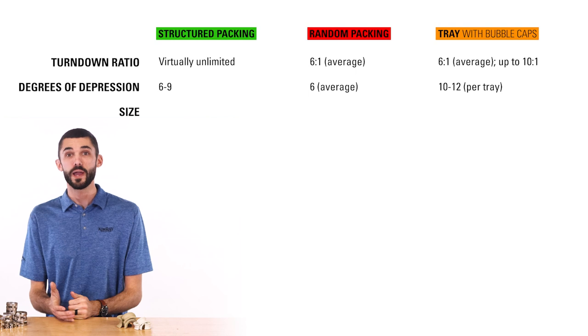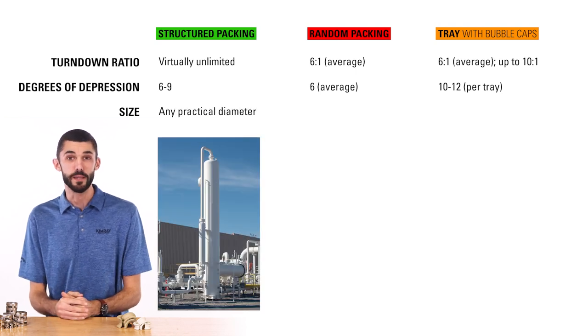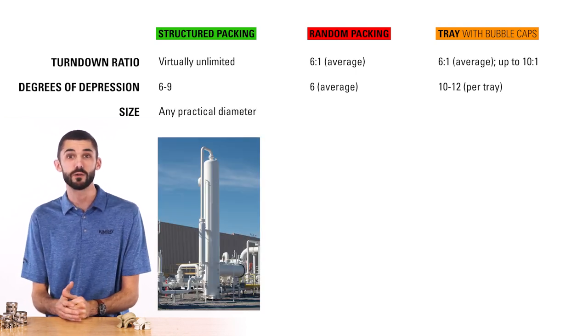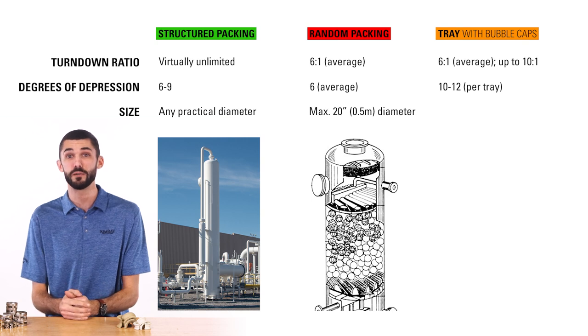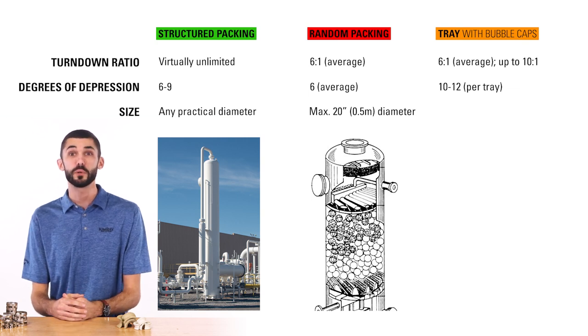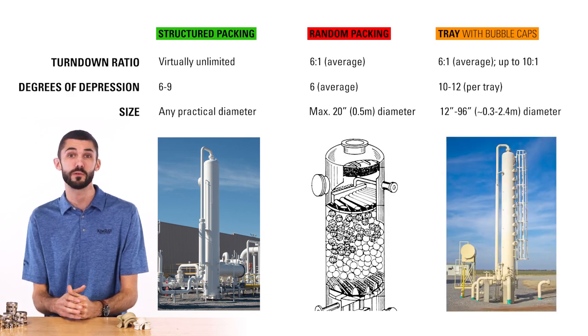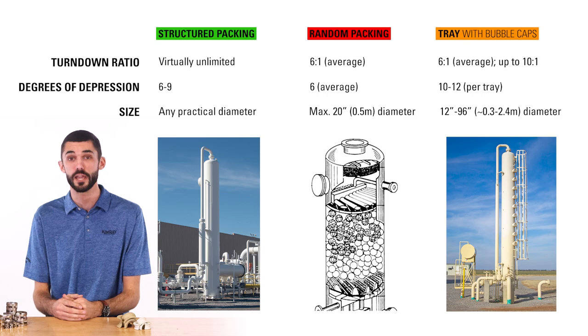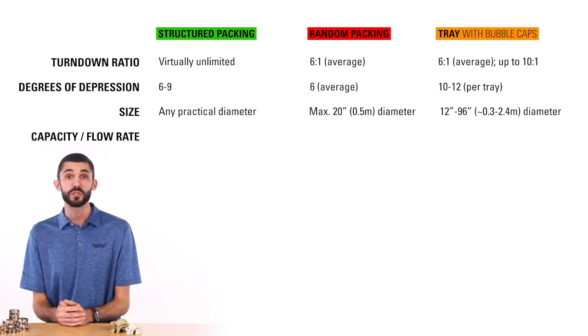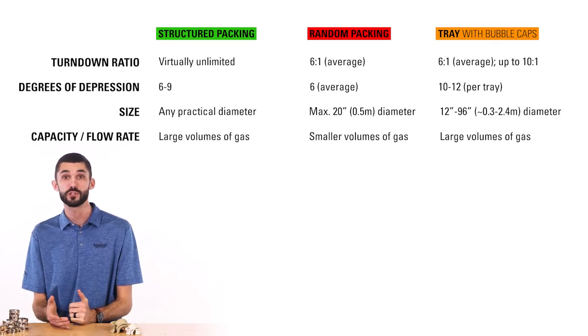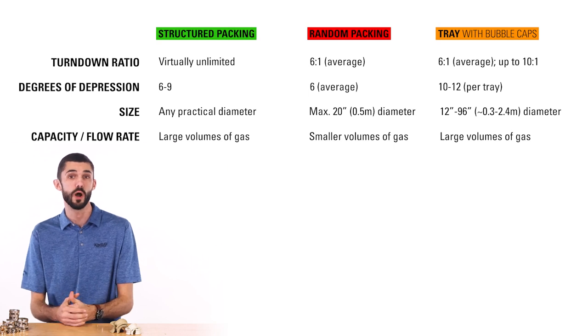A structured packed tower can be any practical diameter. Random packed towers have a maximum of 20 inch diameters — any larger diameter would inhibit the even distribution of glycol across the packing. A tray tower can range anywhere from 12 to 96 inches in diameter. Absorber capacity is primarily determined by the gas volume through the tower, so larger volumes of gas will need larger towers. Therefore, structured or tray designs are the two options for high-capacity applications.